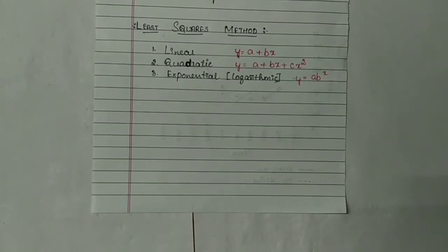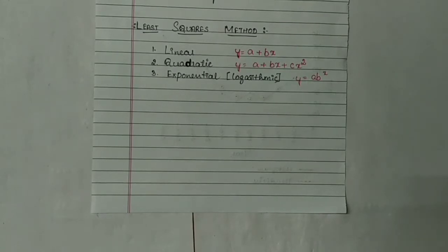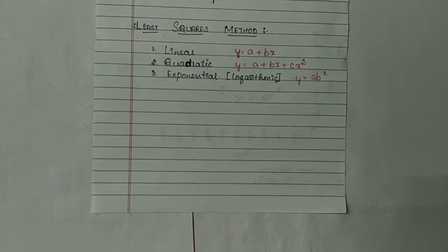We are in the last method of measuring secular trend, that is the least square method. This is the mathematical method of measuring trend. Here, a mathematical equation will be fitted to a given time series. There are three types of least square methods: the first one is linear, the second one is quadratic, and the last one is exponential or logarithmic. Each method will have its own equation. Instead of explaining the equation separately, I will explain it while solving the problem itself.